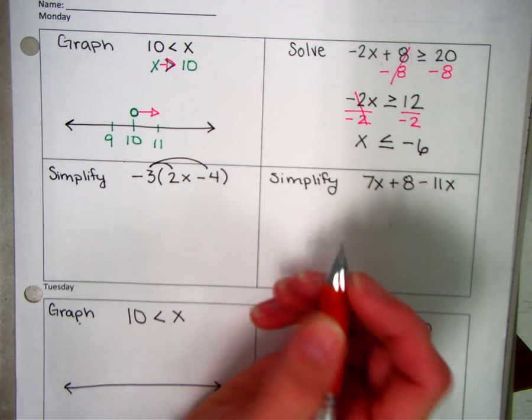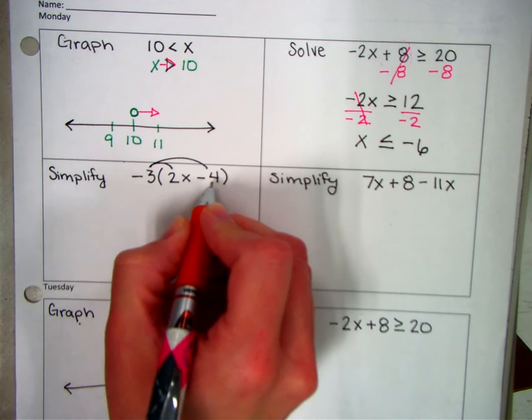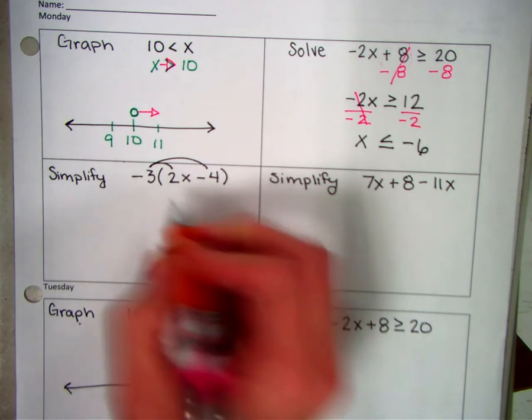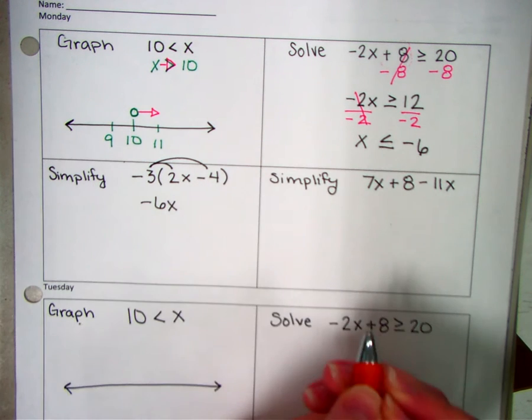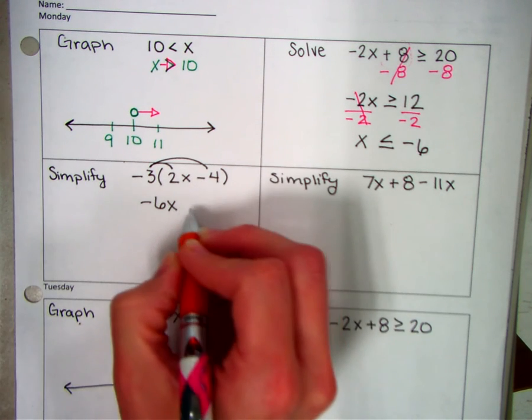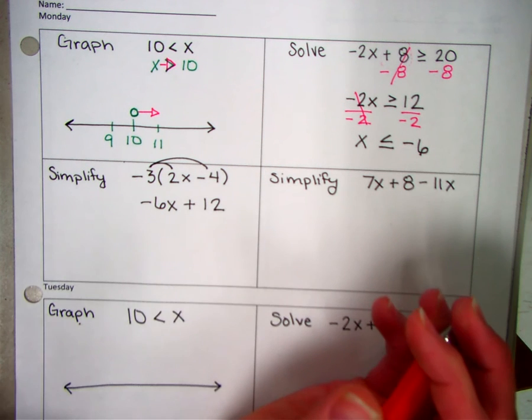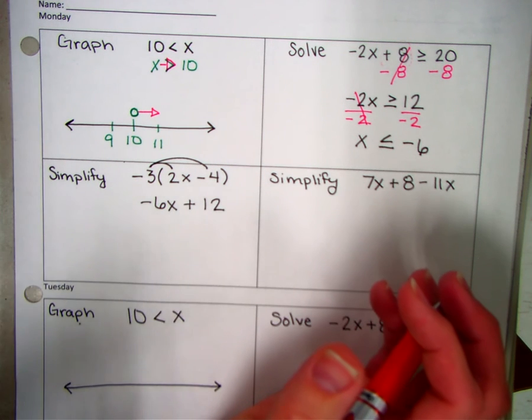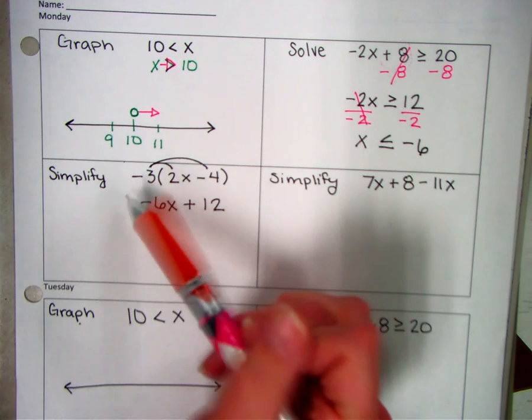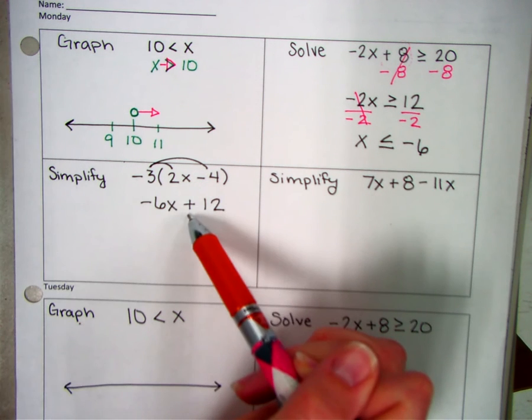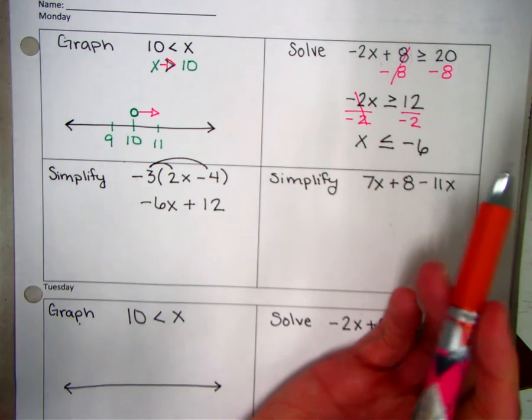The distributive property is going to multiply negative 3 times both of those things. Okay, so check your answer. Negative 3 times 2 is negative 6x. Negative 3 times negative 4 is a positive 12. How'd you do? Okay. One of the skills that you will see on your final is can you multiply a negative number and make sure that your signs are correct? Okay. So is yours correct? Then you'll be able to get that one right on the final.